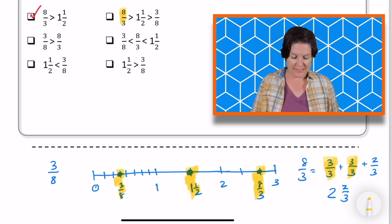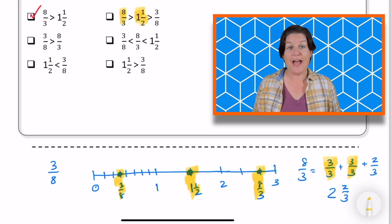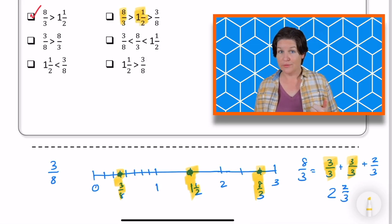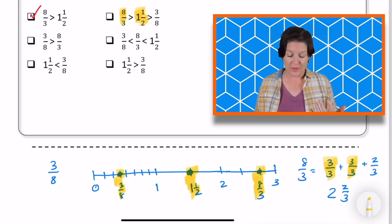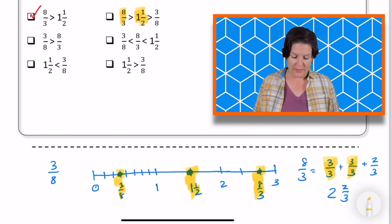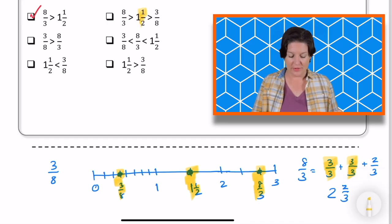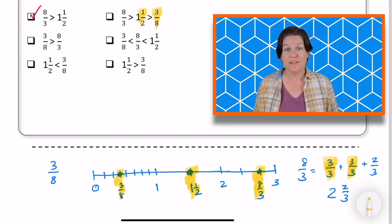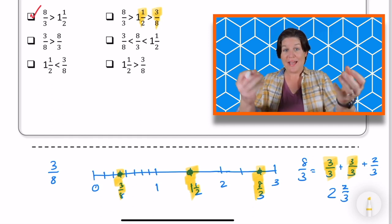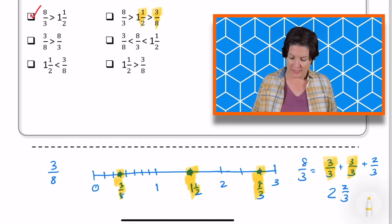Let me move on to 1 1⁄2 is less than 3 8ths. What do you think? Keep that one or eliminate? Yeah, we need to eliminate that one because 1 1⁄2 is greater than 3 8ths. So no to that one. Over here, it says 8 3rds is greater than 1 1⁄2. Is that true? Yes, that is true. 8 3rds is greater than 1 1⁄2. I can see that on my number line that I've created.